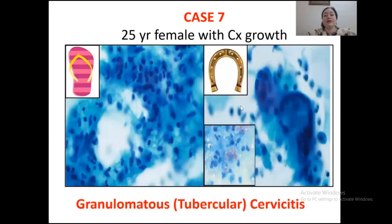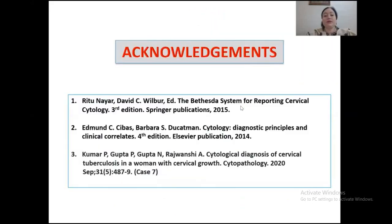Case seven was a female with cervical growth. On the left side of the picture, many epithelioid cells can be seen having moderate amount of cytoplasm and characteristic slipper-shaped nuclei. On the right side, a Langhans-type giant cell gives a resemblance to a horseshoe. The diagnosis of tuberculosis was confirmed on Ziehl-Neelsen stain, which showed many acid-fast bacilli. These are the references for the talk.